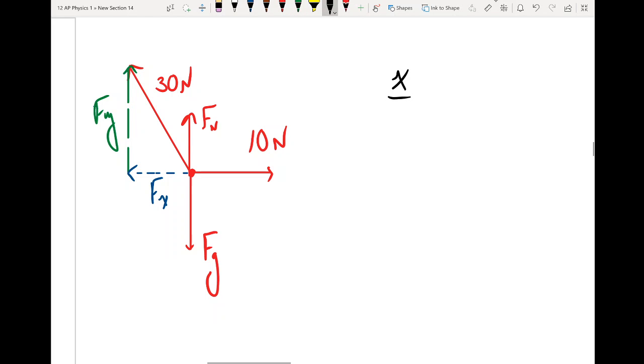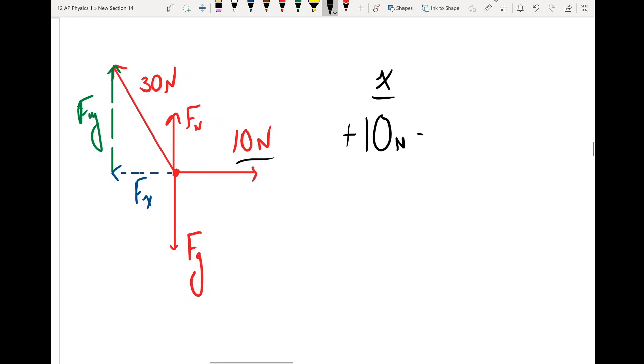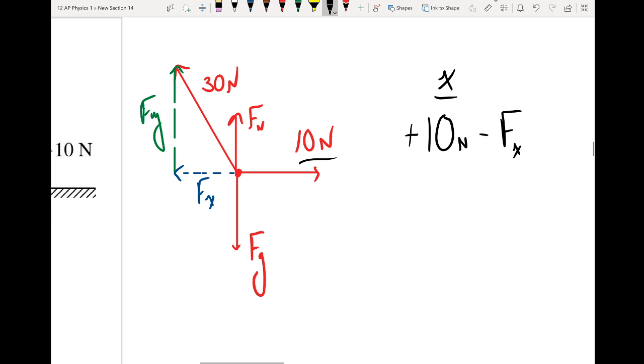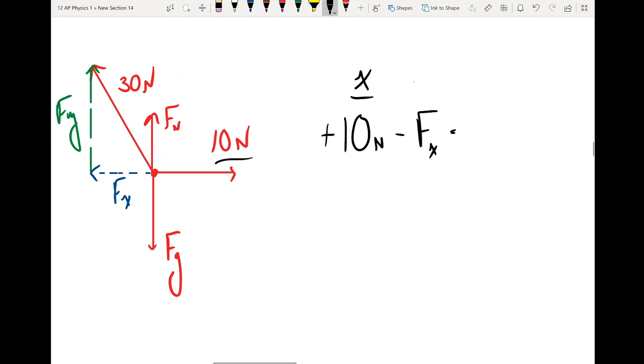So in my x-direction, if I'm listing out my forces, it looks like I have a positive 10 Newton force right there. And then I have this negative Fx. And it's a good thing that I split this up into my components, because now I can really visually and clearly and easily see, oh, this is acting in the x-direction. There's a part of this that is happening in the x-direction. So that minus Fx equals mass times acceleration.